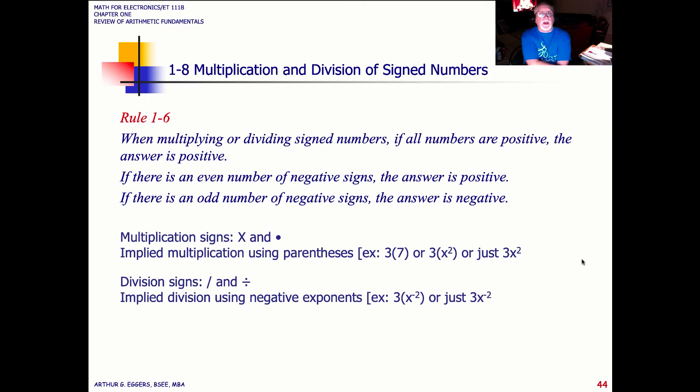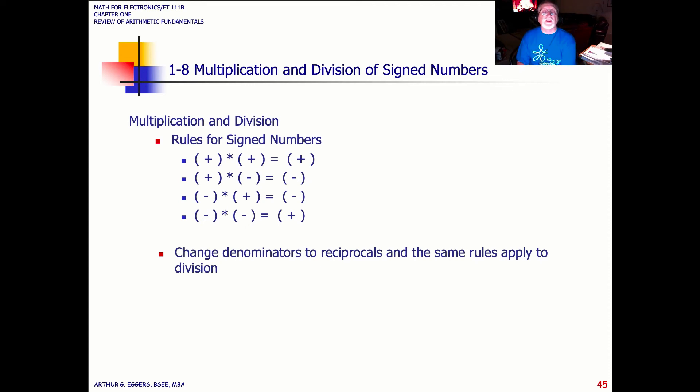In terms of signs, multiplication signs, and division signs, we can use the cross, we can use the dot, and we can actually use parentheses to denote multiplication. On the division here, we can use the slanted line, the divisor sign here with the line and the two dots, or we can use a negative exponent, and we'll learn more about that as we go along. So the rules here, make sure you have these understood and ingrained in dealing with multiplication and division and how we assign the positive and the negative sign. You can change denominators as reciprocals, and the same rules apply. We'll get to reciprocals later.